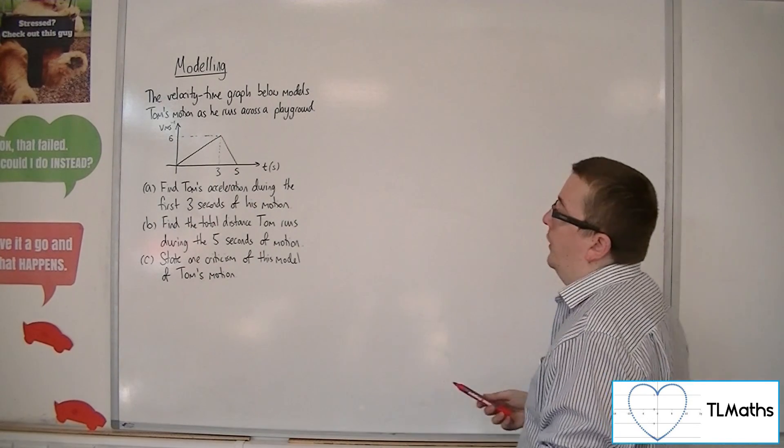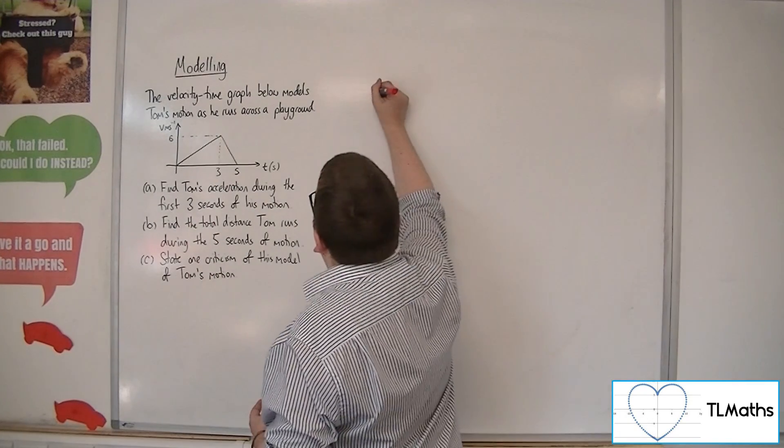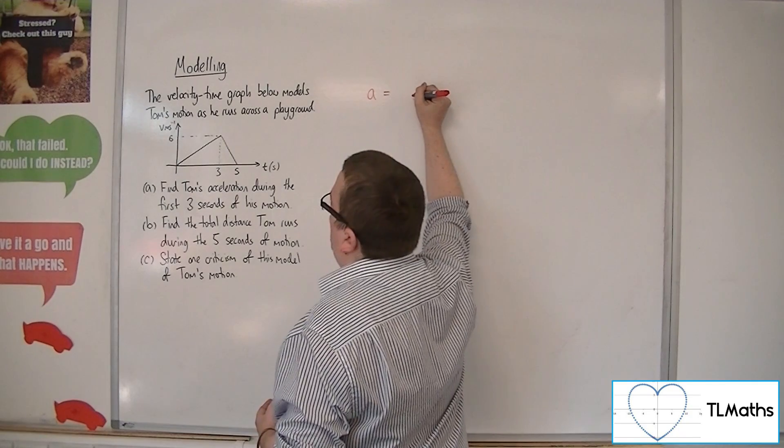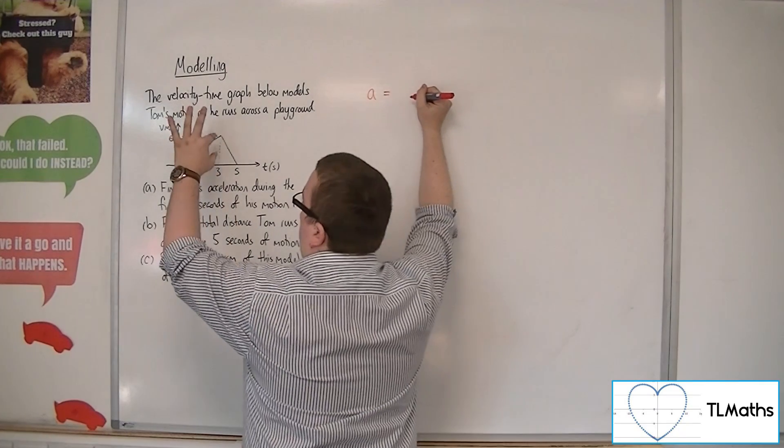So the acceleration, A, will be equal to 6, the height that he's travelled, the velocity,